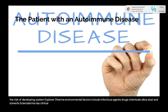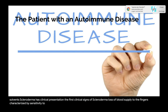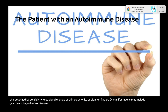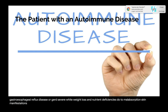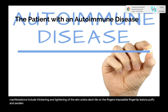Raynaud's phenomenon is one of the first clinical signs of scleroderma — loss of blood supply to the fingers, characterized by sensitivity to cold and change of skin color. GI manifestations may include GERD, severe weight loss, and nutrient deficiencies due to malabsorption. Skin manifestations include thickening and tightening of the skin, sclerodactyly on the fingers, possible fingertip lesions, puffy and swollen fingers, and fatigue. Organ-based manifestations may include lung fibrosis, pulmonary arterial hypertension, and renal failure.